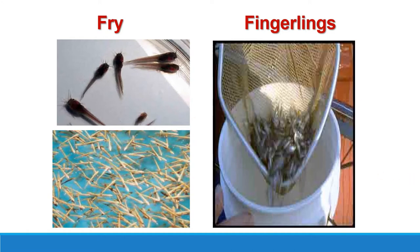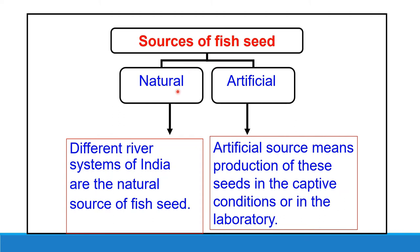If we talk about the sources of fish seeds, these are of two types: natural and artificial. Natural fish seed resources include seeds obtained from rivers and streams, estuaries, reservoirs, and band breeding spawns — meaning fish seeds collected from nature. The second is artificial, which means production of seeds in captive conditions or in the laboratory.